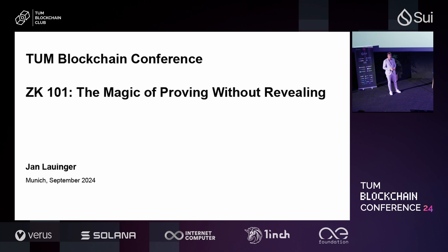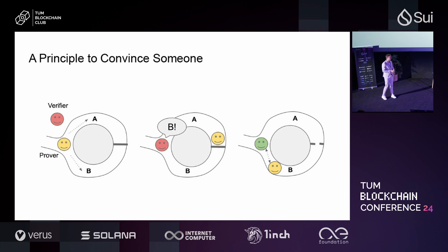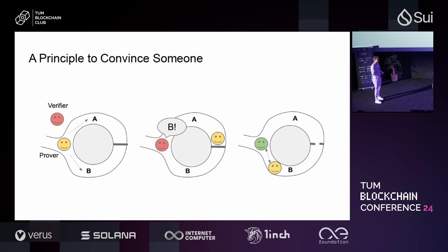Let's start right into the topic. Zero knowledge proofs are cryptographic proof systems, and typically there is a two-party setting where you have a prover and a verifier. The idea is that the prover should convince the verifier of a certain statement — and we take the example of Alibaba's cave.